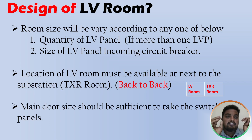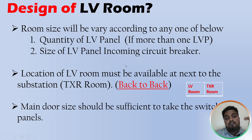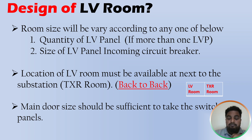The first thing in the design of the LV room is the size of the room. The size will vary based on two options. First, the quantity of LV panels — if more than one LV panel is in the LV room, the size will increase. If you have only one panel, the size mainly depends on the incoming circuit breaker of the LV panel. For example, a 2500A ACB incoming will require size X, while a 1000A ACB will require a smaller size Y.